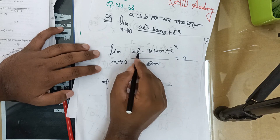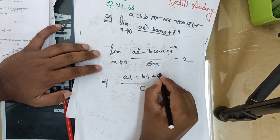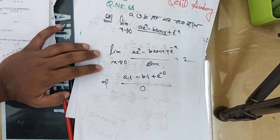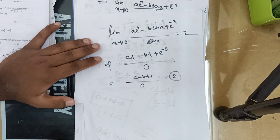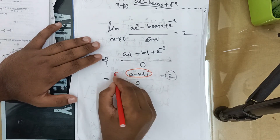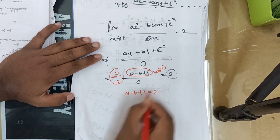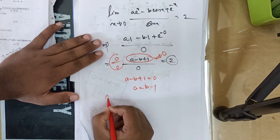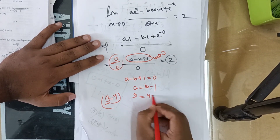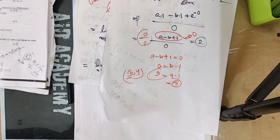e to the power x means e to the power 0, which means 1. b·cos(x) means cos(0), which means 1. And e to the power minus x means e to the power minus 0, which means 1. So we have the condition: a minus b plus 1 equals 0. Therefore A equals 3, B equals 1, and the left-hand side and right-hand side are solved. If you have any questions, please visit our Facebook group page or Telegram group — check the link in the description. Thank you.